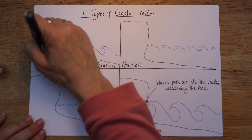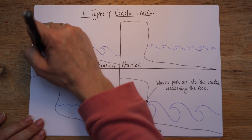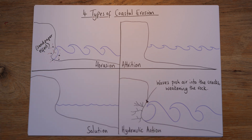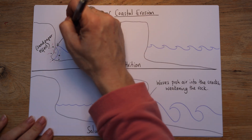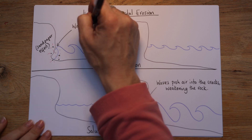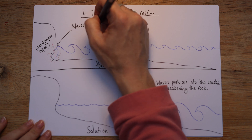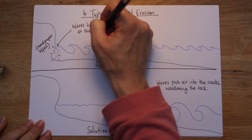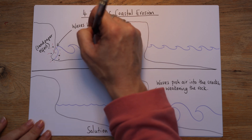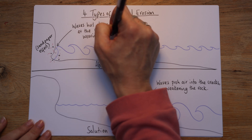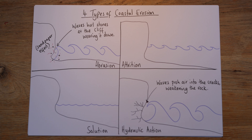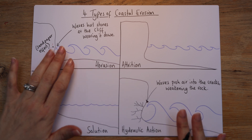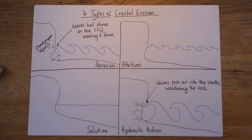Let's write: sandpaper effect — waves hurl stones at the cliff, wearing it down. If you're in an exam question, like a four-marker asking about erosional processes, those are the two I would talk about first every single time. The other two are important, but less so in terms of their impact.